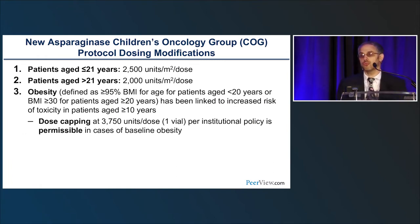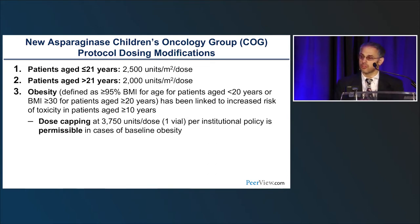The Children's Oncology Group recently included dosing modifications for patients older than 21 years and for obese patients. The standard dose has been 2,500 international units per meter squared per dose. A newly FDA-approved dosing for adults is 2,000 international units per meter squared per dose. For patients with elevated BMI, consider using a dose cap to avoid excess toxicity.